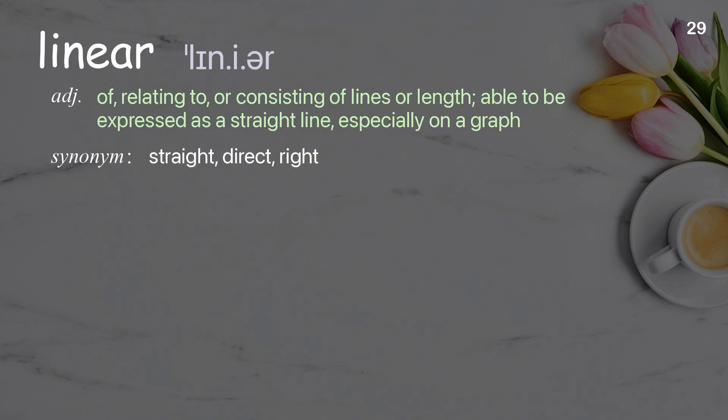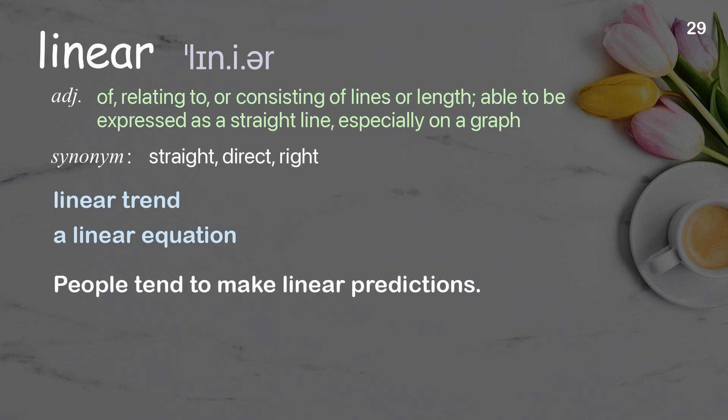Linear: of, relating to, or consisting of lines or length; able to be expressed as a straight line, especially on a graph. Examples: linear trend; a linear equation. People tend to make linear predictions.